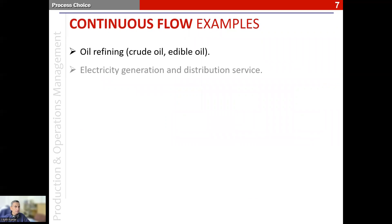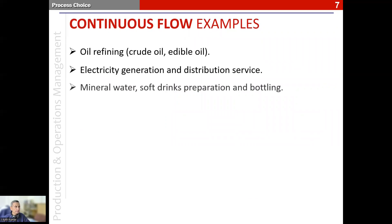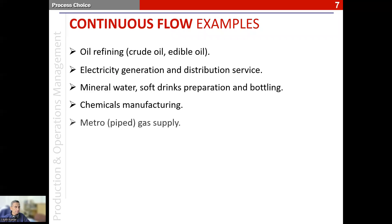Examples include crude oil refining and electricity generation, as we already saw, as well as the production of mineral water and soft drinks — where preparation and bottling all happen in continuous flow mode. Chemicals manufacturing is another area where many chemicals are produced using the continuous flow process. Metrogas supply, in places where gas is supplied to houses by a centralized source, is also done through continuous flow.